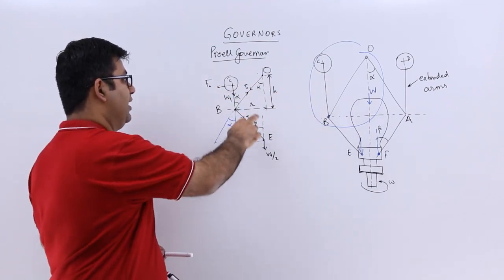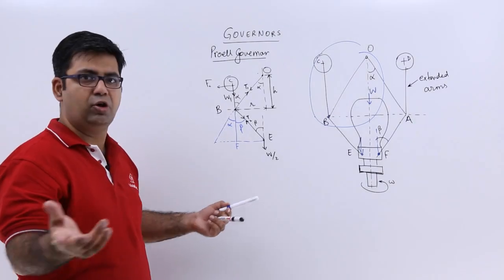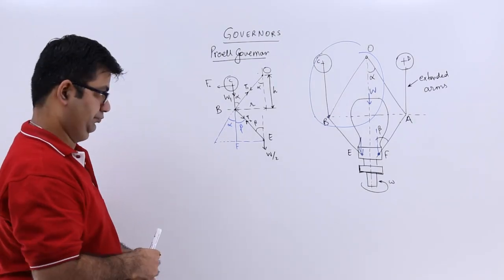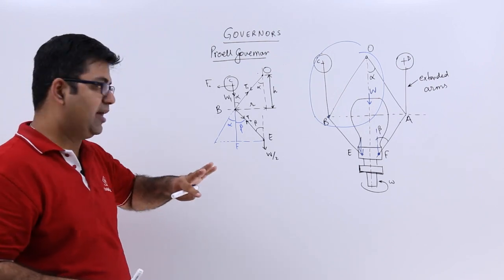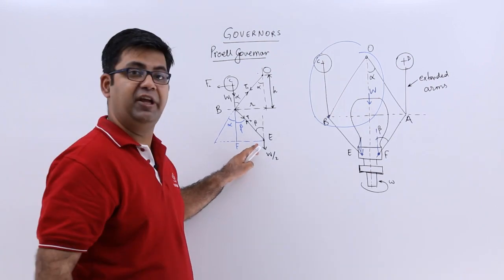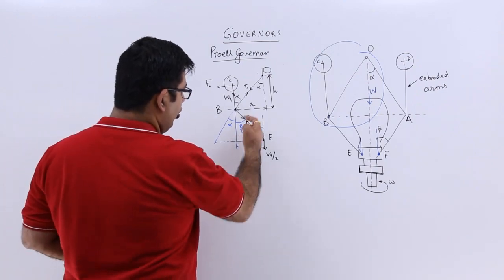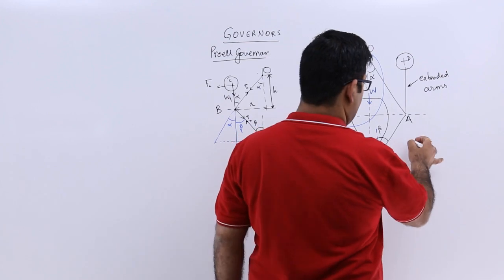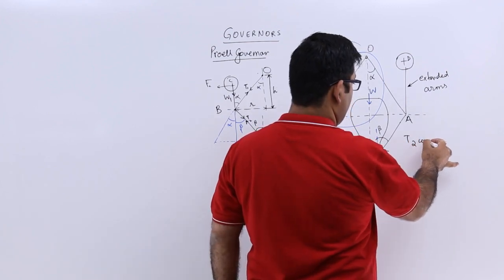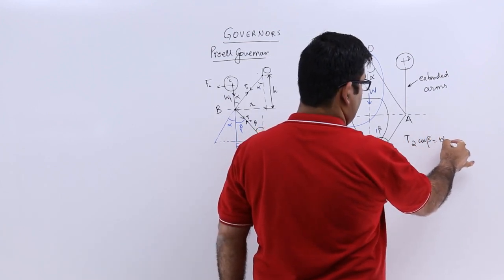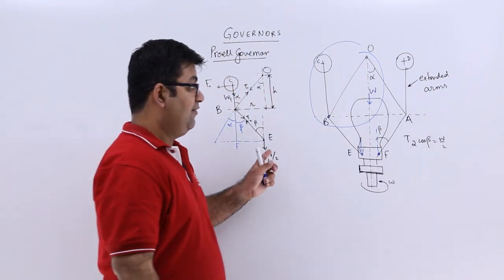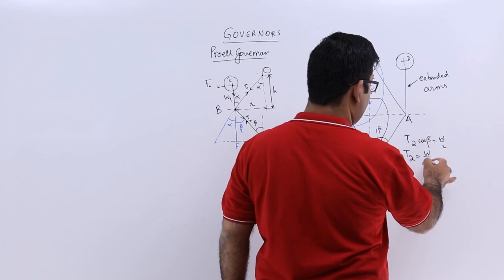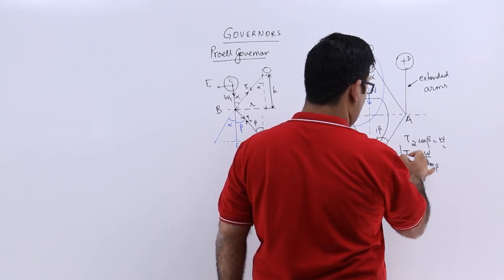Then you have angles alpha and beta, and T1 and T2, which is almost the same as the Porter governor. Now, let's start by considering the equilibrium at point E. So you will have T2 cos beta equal to W by 2, where T2 is W upon 2 cos beta.